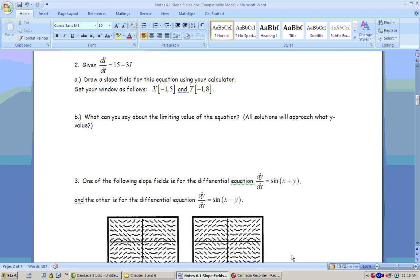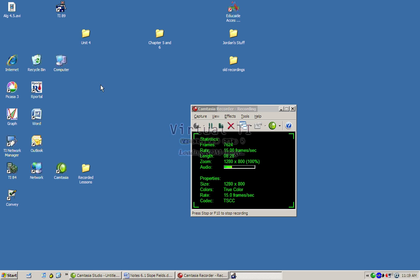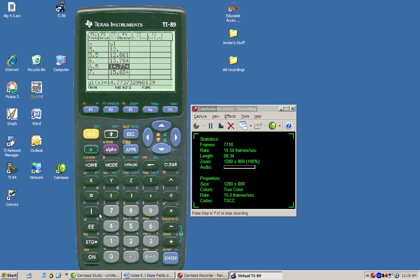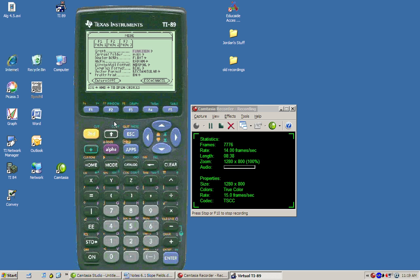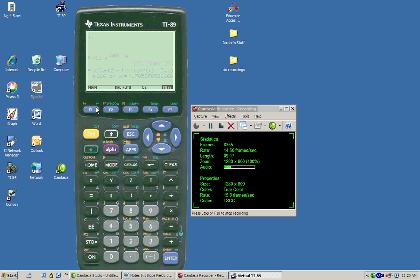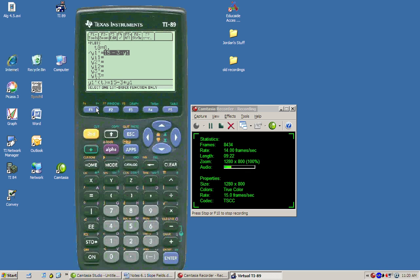Okay, on number two, we're actually going to use your calculator. Very real, and I just want to show this to you because you can check your answers on your calculator. I've never seen them give you a slope field equation where you're actually able to use your calculator. But this is just kind of extra information for you. Given that di/dt equals 15 minus 3i. The first thing you're going to need to do is go to mode. And the very first thing on mode is up here at the top is graph, and right now we're in function mode. Right arrow, and we're going to change it to differential equations mode.